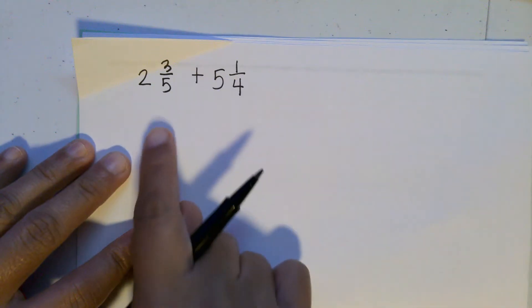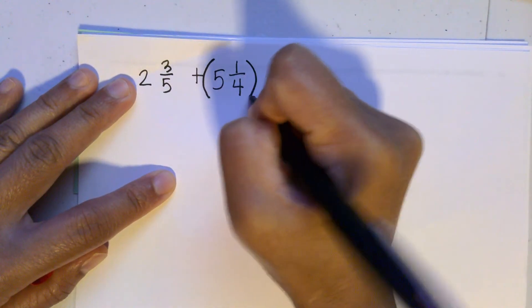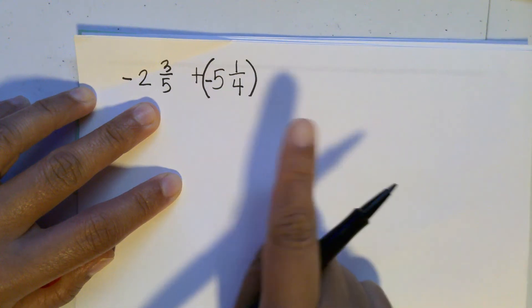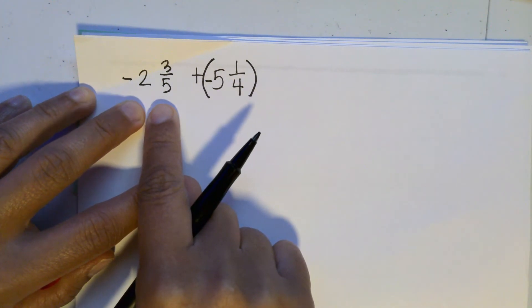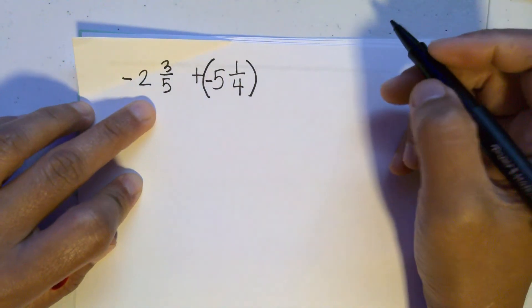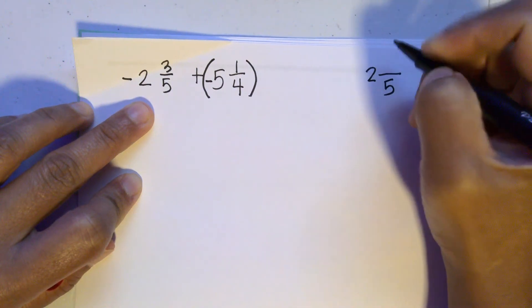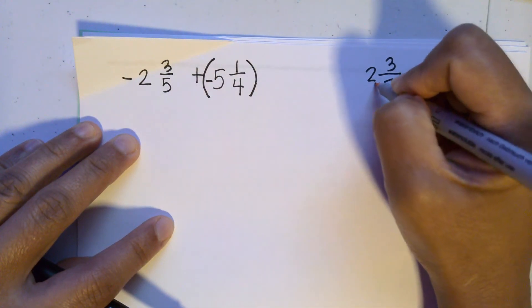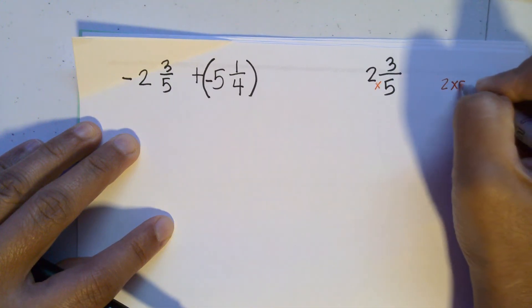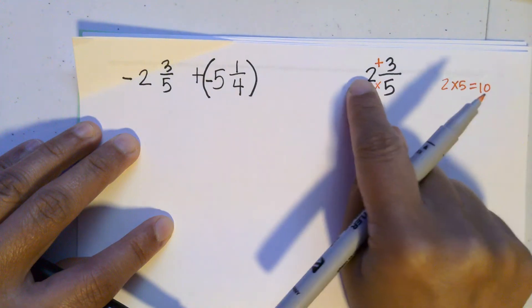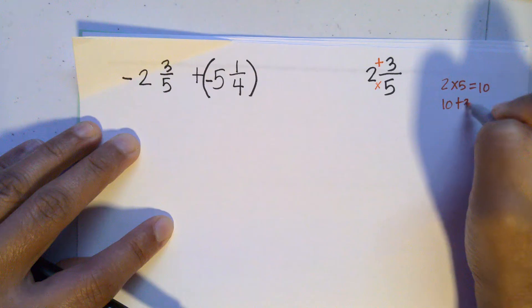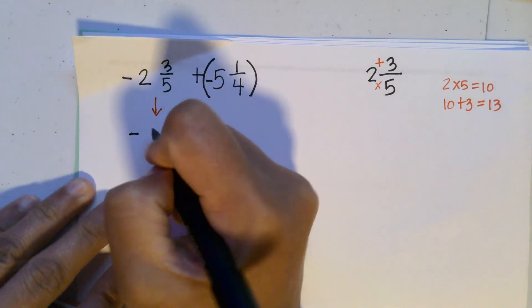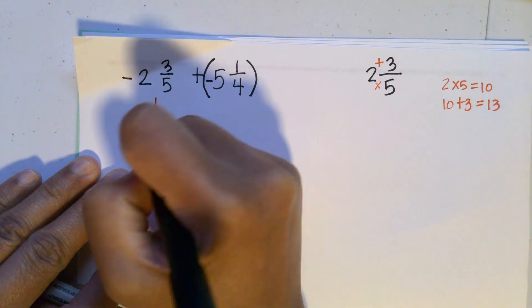Now let's have another example with mixed numbers — this time both are negative. One way to work this out is to change the mixed numbers into improper fractions. We multiply the whole number by the denominator and add the numerator, ignoring the sign for now. So for two and three-fifths: two times five is ten, plus three equals thirteen. This becomes negative thirteen over five.